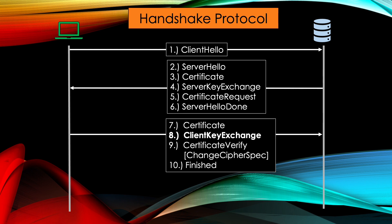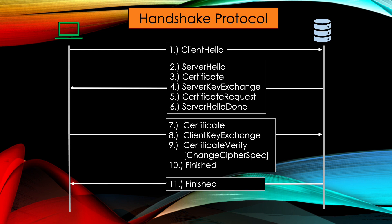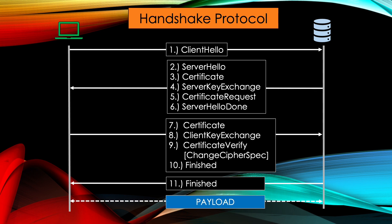Now, client and server have all the necessary information to calculate the master secret from the pre-master secret and the random numbers from CLIENT and SERVER HELLO. Every cryptographic key during this session is derived from this master secret. If the client transmitted his certificate, he signs it with the master secret, as well as all other outgoing messages from here on out. After the certificate has been validated, both parties exchange ChangeCipherSpec messages to activate the negotiated security parameters. The protocol ends by both parties sending FINISHED to each other. This is the first message that is actually encrypted and serves as a check whether everything worked out as planned. Now the encrypted payload can be exchanged between client and server and the handshake protocol is completed.